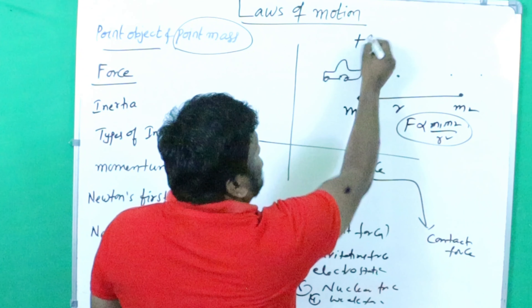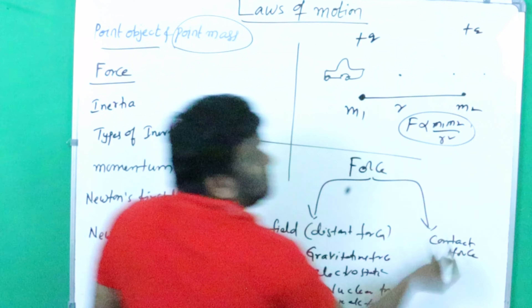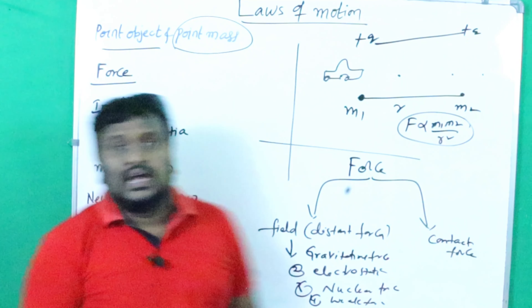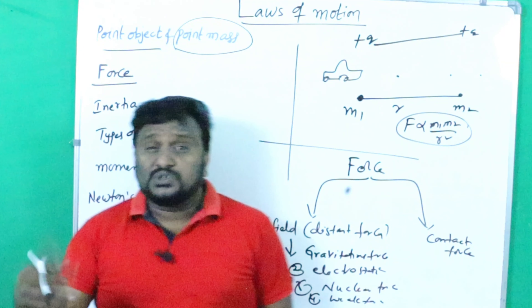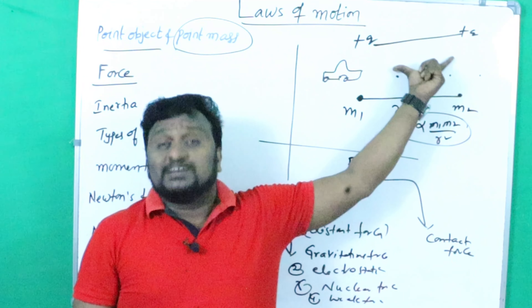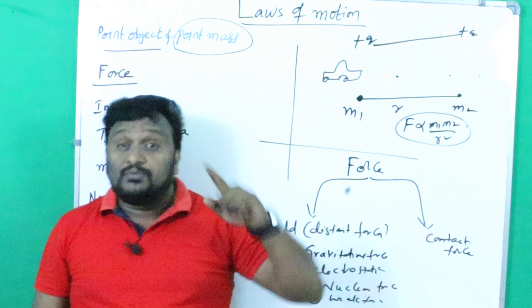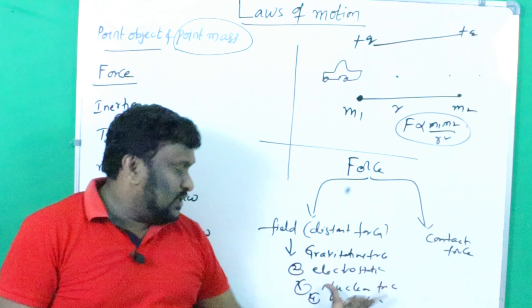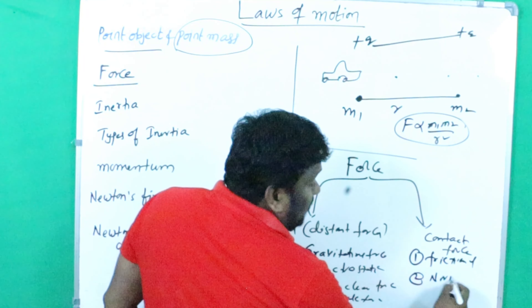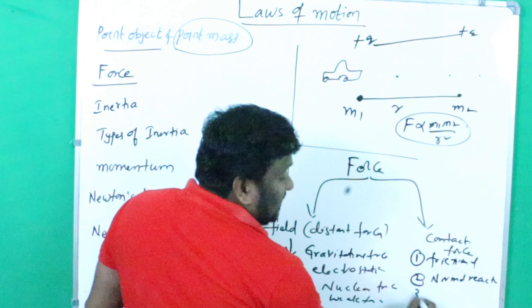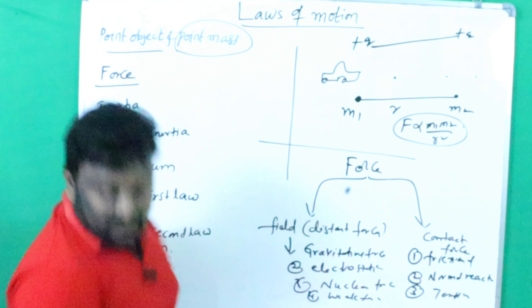Even though the objects maintain some distance — they have a distance of separation — some force is still acting. That is what we call field force or distance force. That is why gravitational force is one example. If you take two charges, say +q and +q, there is some repulsive electrostatic force acting between them. Electrostatic force is the force acting between two stationary charges separated by some distance. Similarly, nuclear forces and weak forces are all examples of field or distant forces.